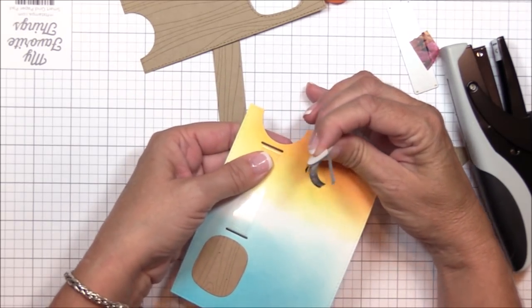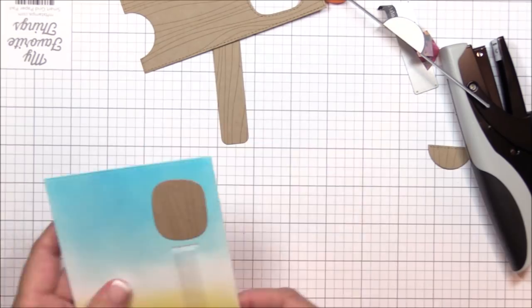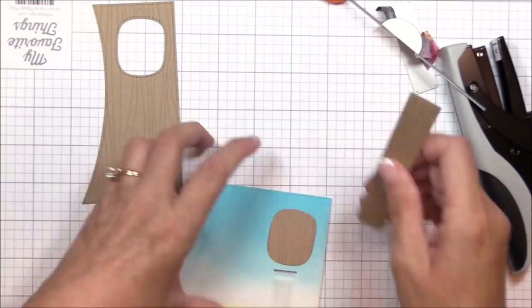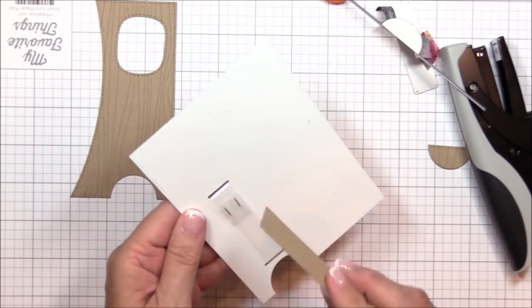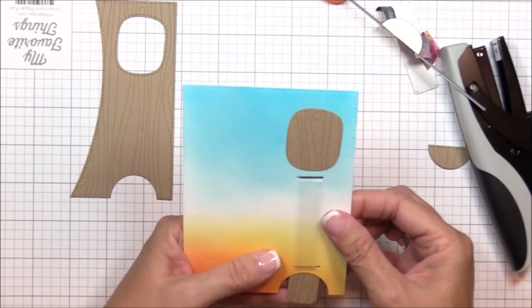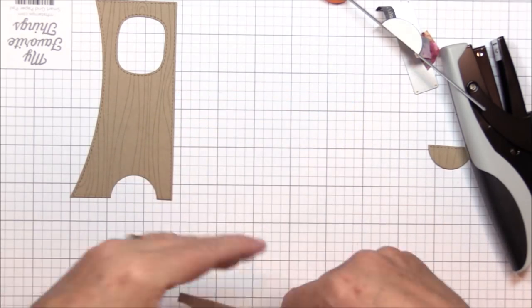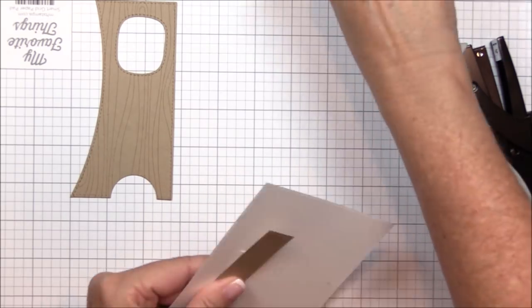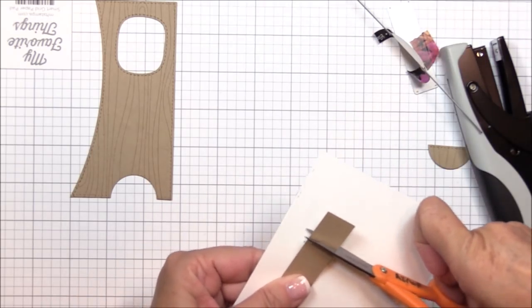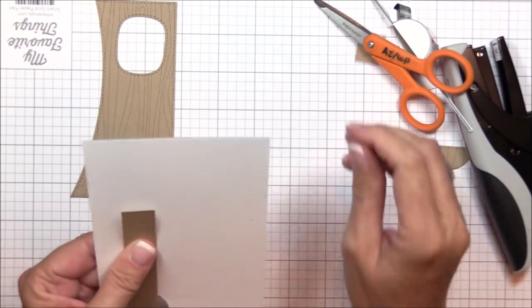Now it's time to attach the pull tab to the mechanism. The science behind this double slider loop mechanism is that when you pull down on the back of the loop, the front of the loop goes up. So I want to attach the pull tab to the back of the loop using my tiny attacher and again staple it in the same area towards the top slot as I did with the loop.